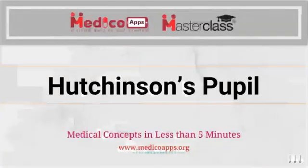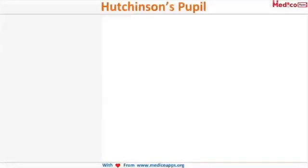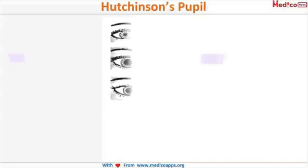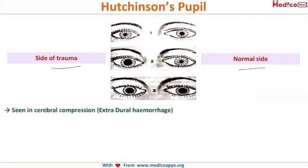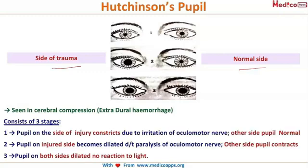Hutchinson's pupil results from head trauma causing cerebral compression, typically due to extradural hemorrhage. It has three stages. In stage one, the pupil on the side of injury constricts due to irritation of the oculomotor nerve, while the pupil on the other side is normal.